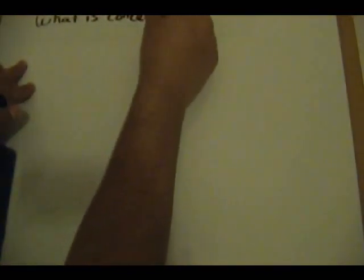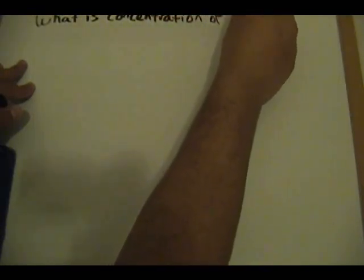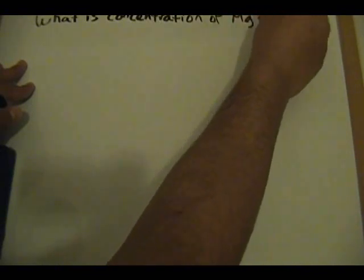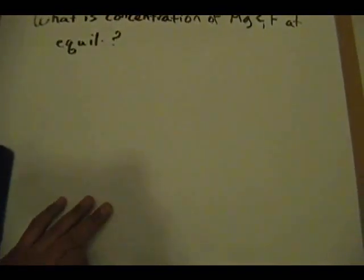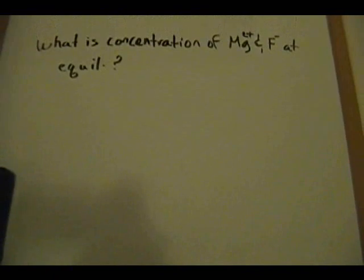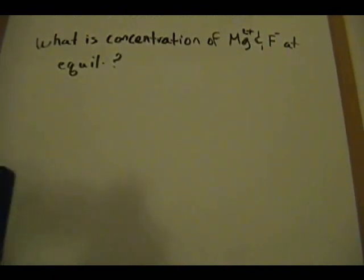The first part of the video was an introduction. This second part addresses the question: what is the concentration of magnesium ions (Mg²⁺) and fluorine ions (F⁻) at equilibrium? Let's get started with that.